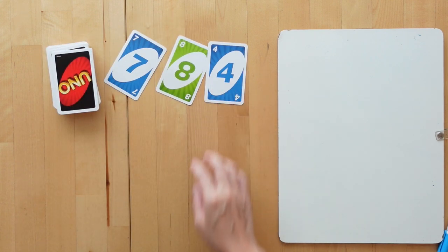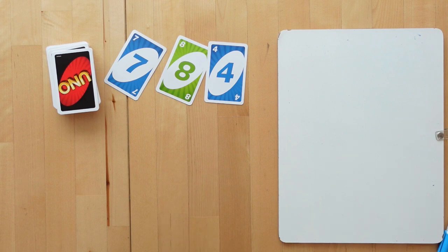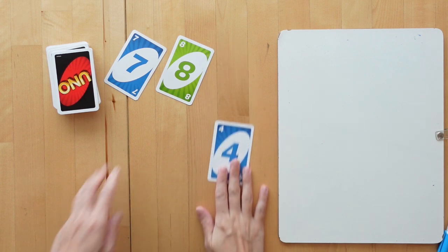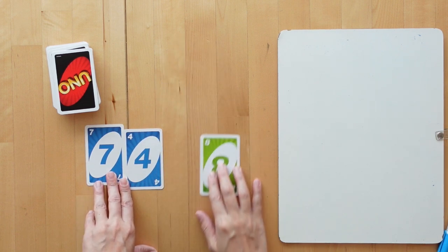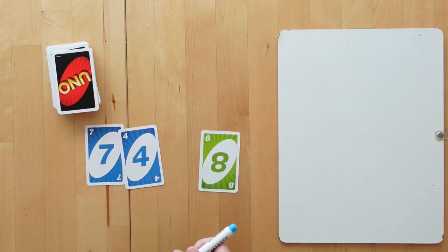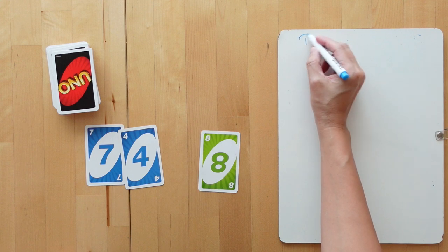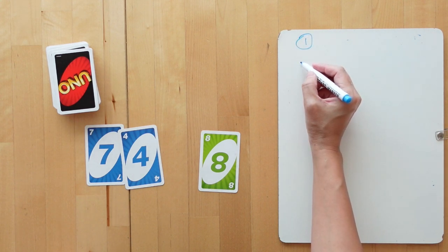So, here we have four, seven and eight. I'm going to try to get two large factors by adding four and seven to get eleven, and then multiply that by eight to get eighty-eight.